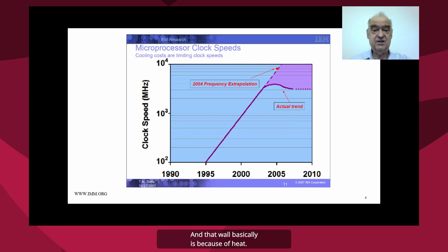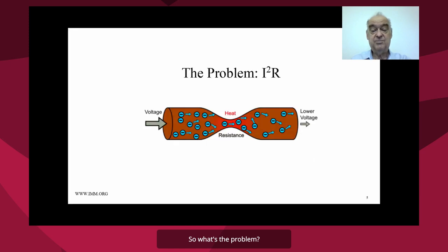And that wall basically is because of heat. We are not able to cool our computers adequately and therefore we can't run them faster. So what's the problem? Well the problem is fairly simple. When you move electrons through wires they generate heat. That's the I squared R problem.